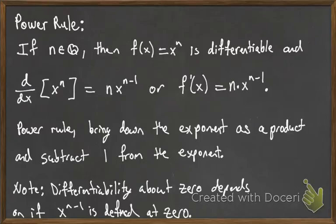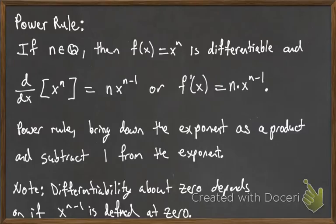The power rule for derivatives says: if n is in the rational numbers and f(x) = x^n, then f is differentiable, and d/dx[x^n] = n·x^(n−1). In other words, f′(x) = n·x^(n−1) — you bring down the exponent as a coefficient and subtract 1 from the exponent.